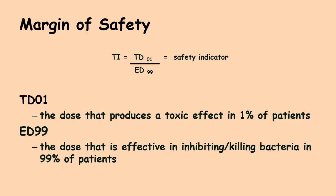Pharmaceutical companies also calculate the margin of safety, which is more stringent than the therapeutic index. While the TI is TD50 over ED50, the margin of safety uses the ratio of TD01 — the concentration at which 1% of the population had a toxic dose — over the ED99, requiring that 99% of the population has an effective dose. This makes it a much more stringent safety indicator.